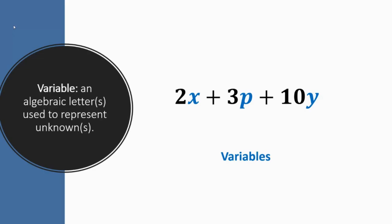Firstly, a variable is an algebraic letter used to represent an unknown. So in our expression there on the right hand side, the letters x, p and y are known as the variables. It can be any letter of the alphabet.